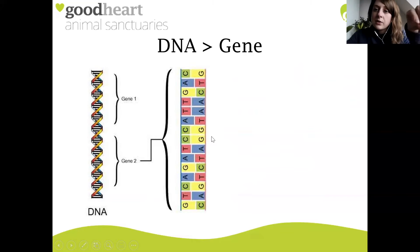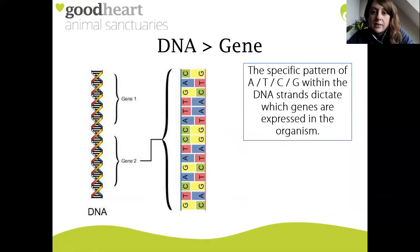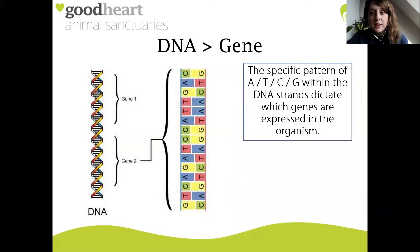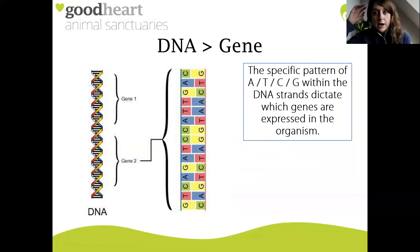This sequence of base pairs is what differentiates the different genes. That specific order of letters dictates what genes are expressed. The specific pattern of A, T, C and G within the DNA strands dictate which genes are expressed in the organism. So a certain sequence - say C, A, G, T - could equate to a brown hair colour being expressed.